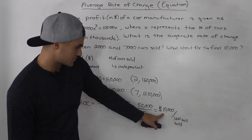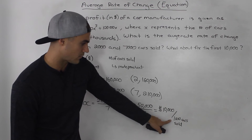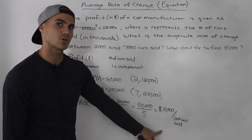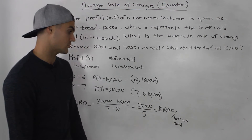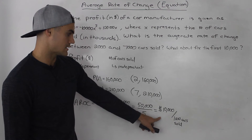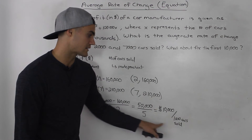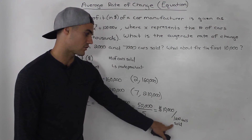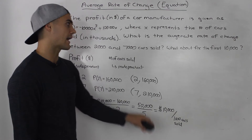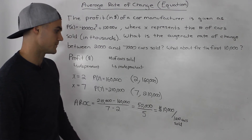You could also divide $10,000 by 1,000 to get $10 per car sold, but it's generally better to leave it in terms of however the independent variable is represented in the question.